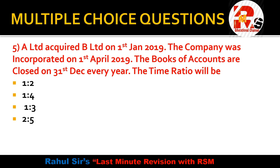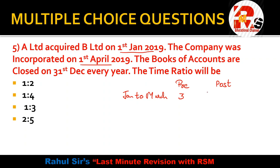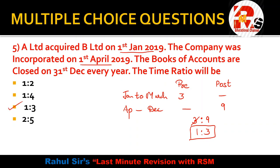Next practical question: A Limited acquired B Limited on 1st January 2019; the company was incorporated on 1st April 2019; books of accounts are closed on 31st December every year. Calculate the time ratio. Pre-incorporation period: January, February, March = 3 months. Post-incorporation period: April to December = 9 months. So the ratio is 3:9, which simplifies to 1:3. The right answer is 1:3.